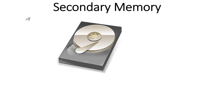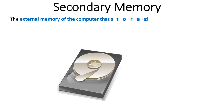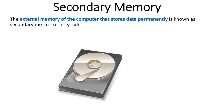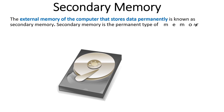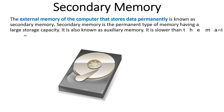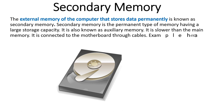Secondary memory is the external memory of our computer system that stores data and information permanently. It is a permanent type of memory with large storage capacity, also known as auxiliary memory. This type of memory can store large amounts of data; however, it is slower than primary memory and is connected to the motherboard with the help of cables.